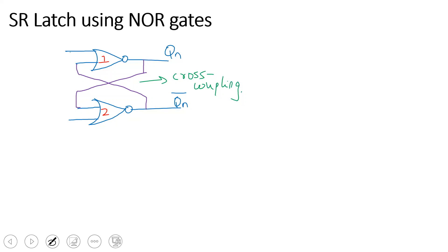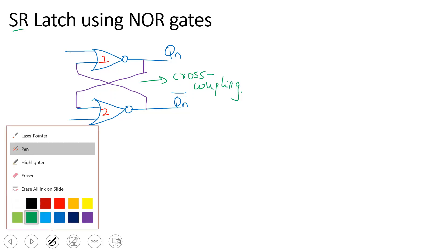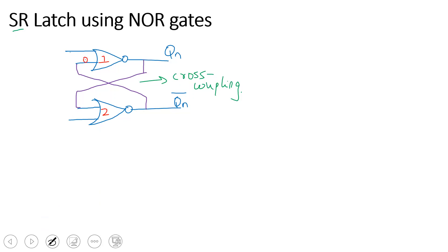SR latch is nothing but two cross coupled NOR gates. S stands for Set and R stands for Reset. The input to gate 1 is QN bar, and there are two inputs: S and R.